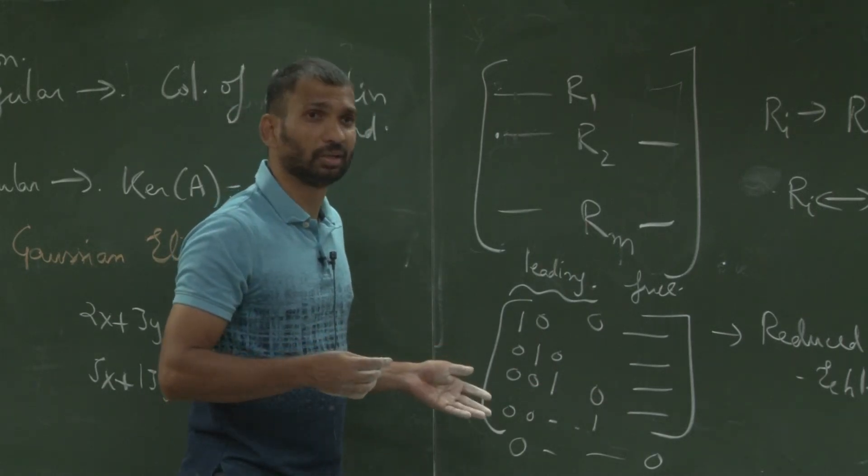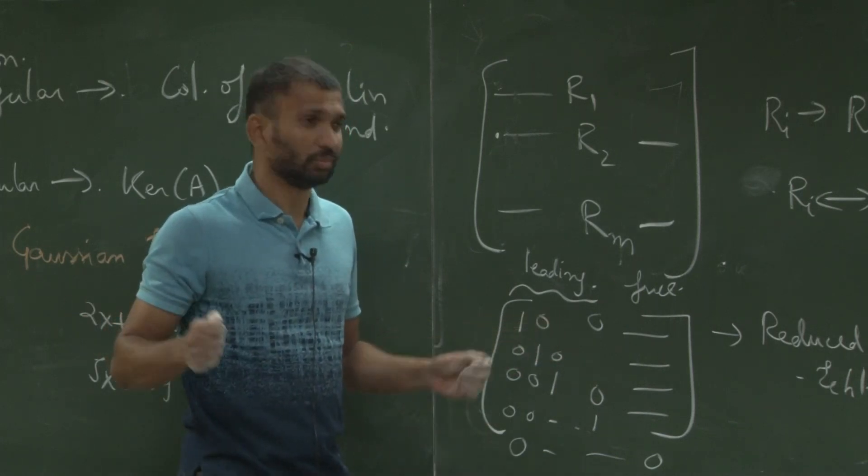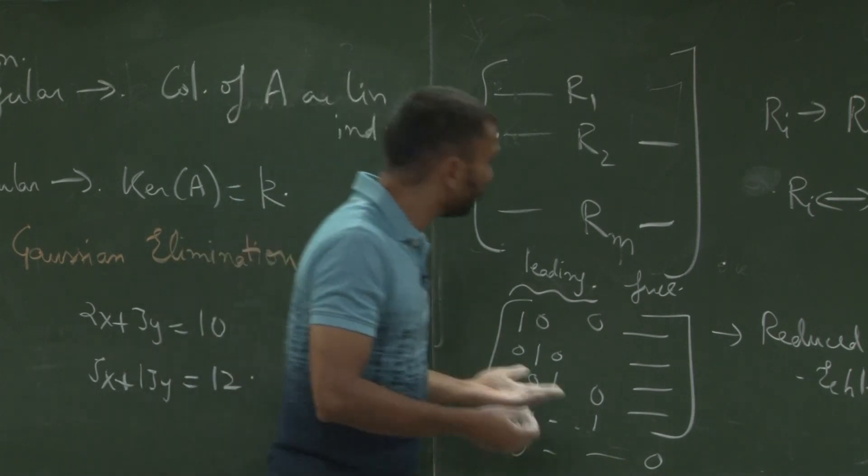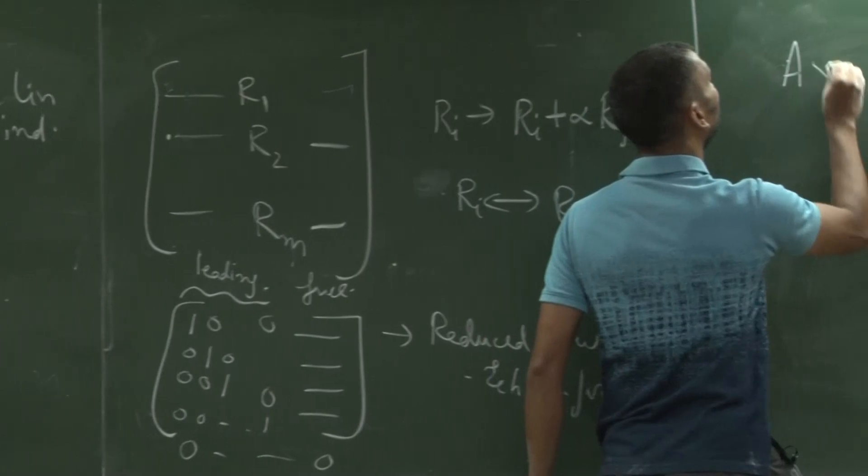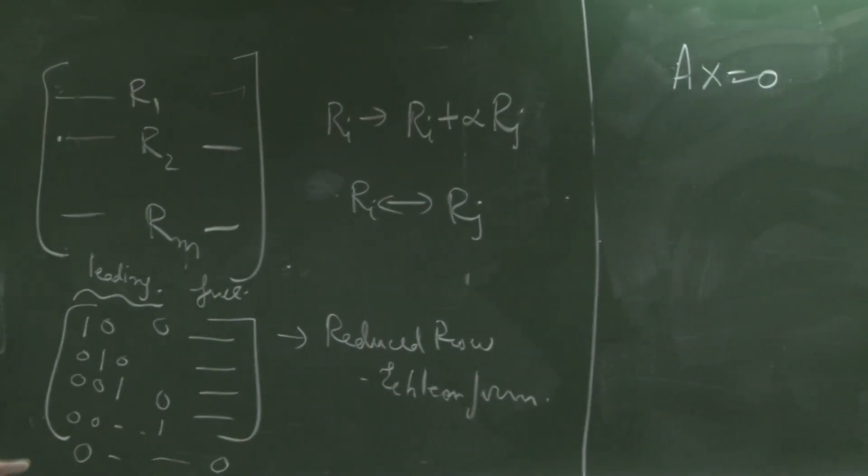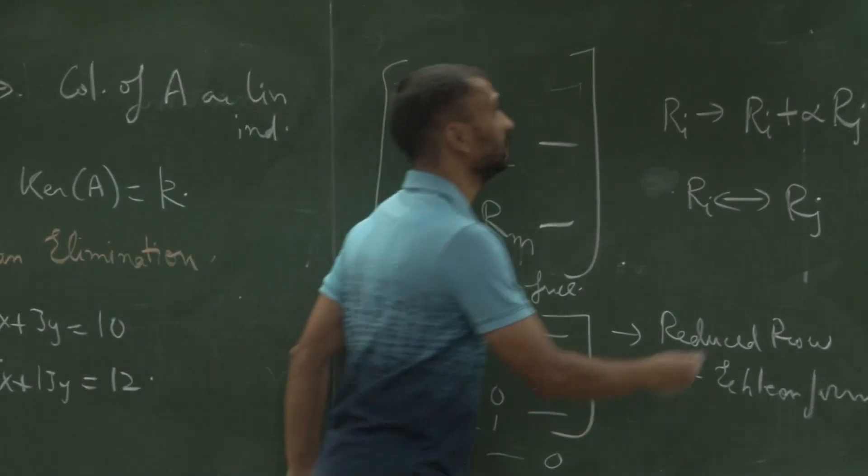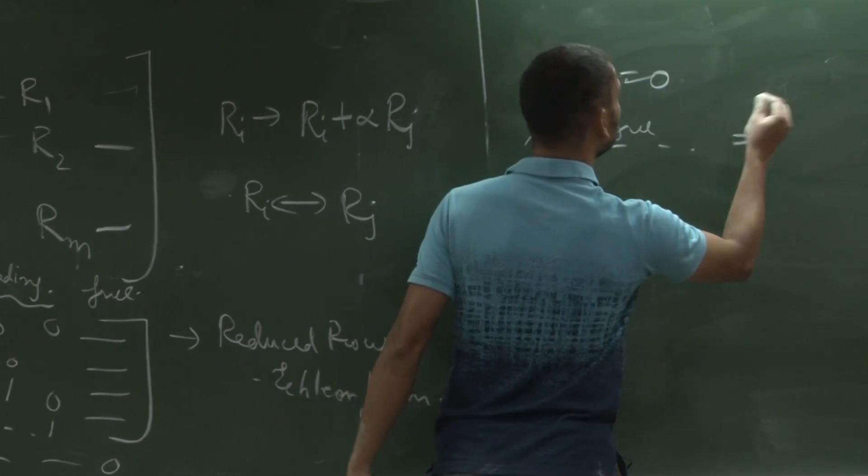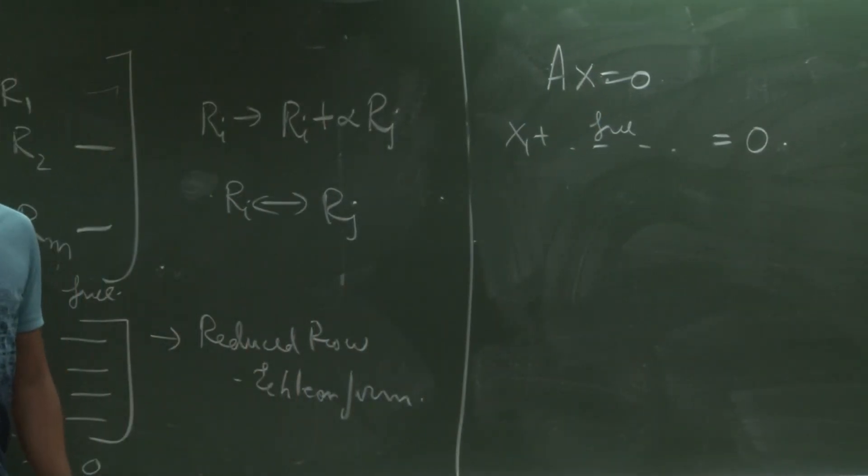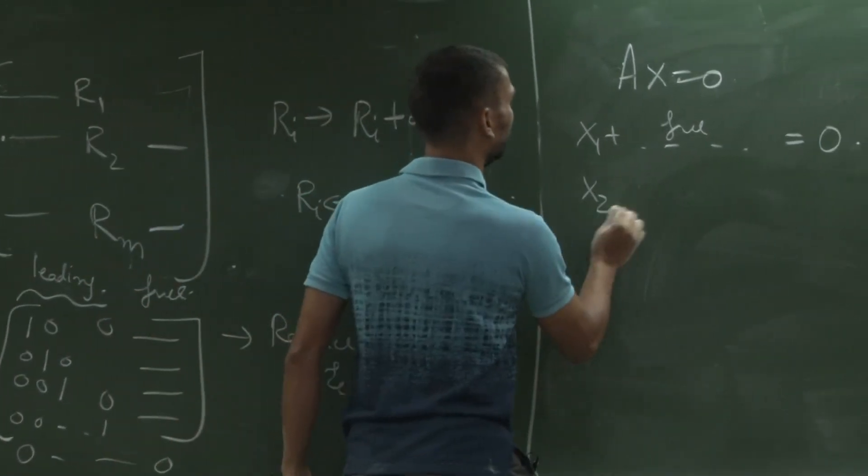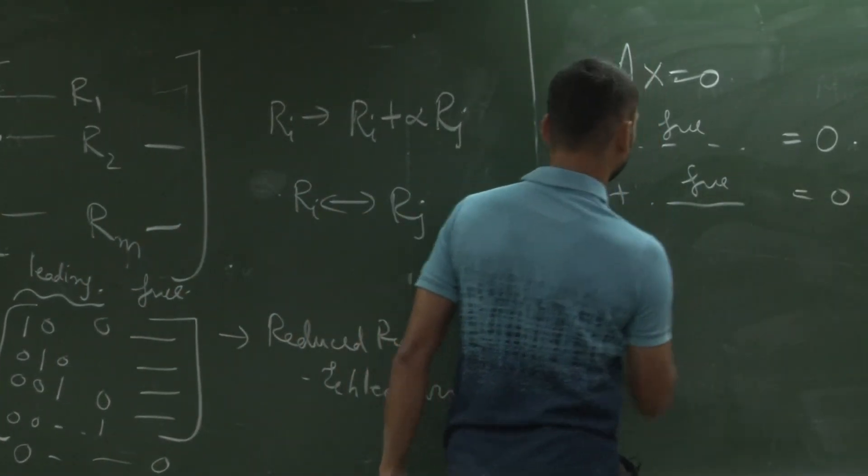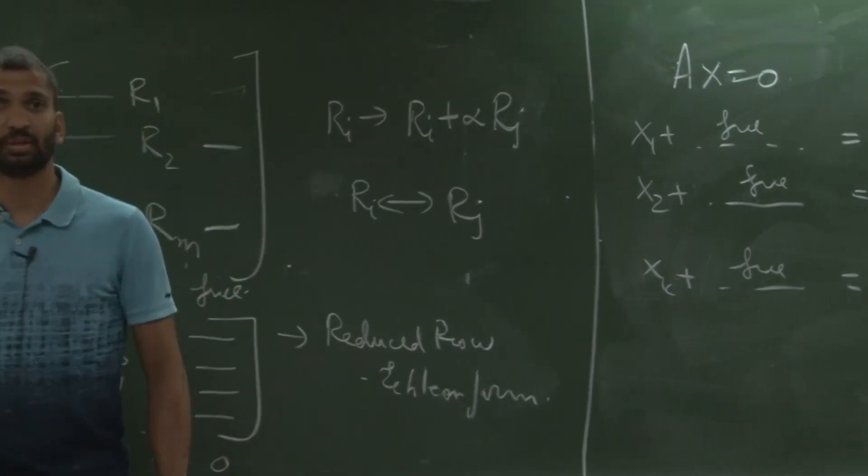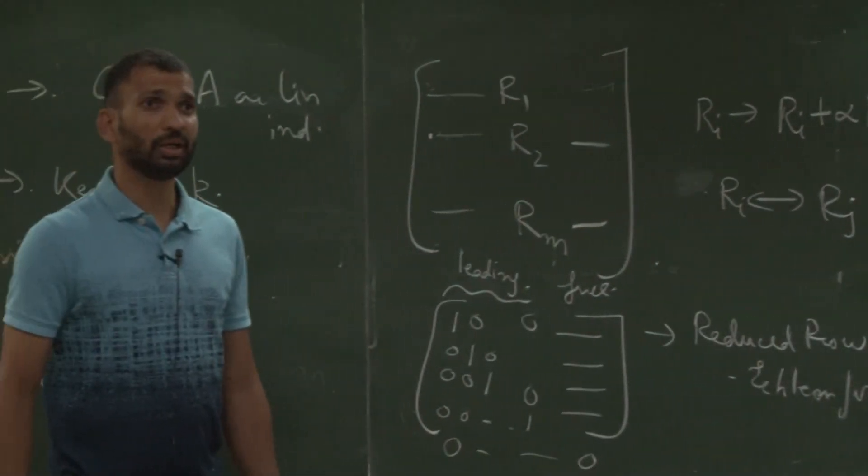Why are they free? We do not care about them. You can do whatever with them and still I will have a solution, right. So now why? Why is that true? Because if you look at Ax equal to 0, what is the first equation? It is saying x1 plus something in free variables equal to 0. So what is the second equation? It is saying x2 plus something in free variables, right.